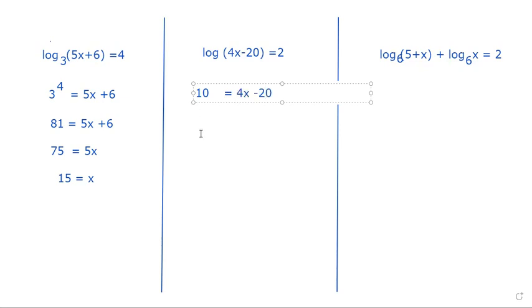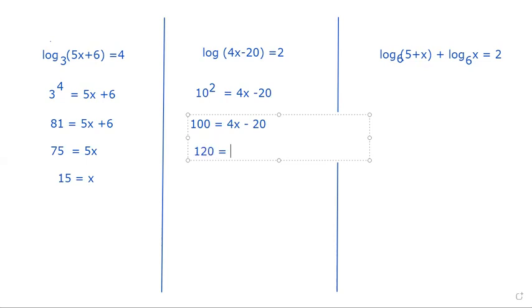So that gives us 10 raised to the second power is equal to 4x minus 20. Now we have 100 is equal to 4x minus 20. So we need to add 20 to both sides. That's 120 is equal to 4x. And of course, to get x by itself, we divide both sides by 4. So that's going to give us 30 is equal to x.